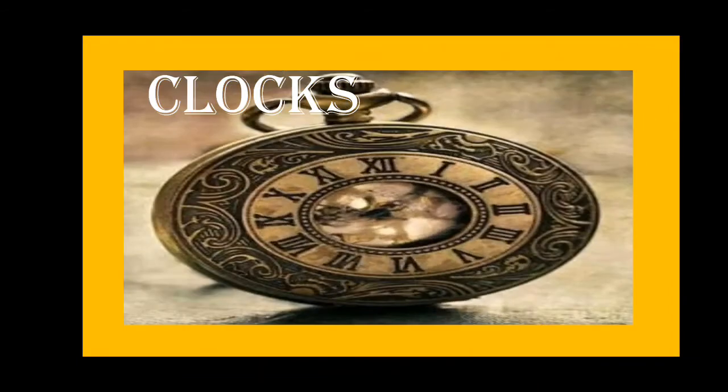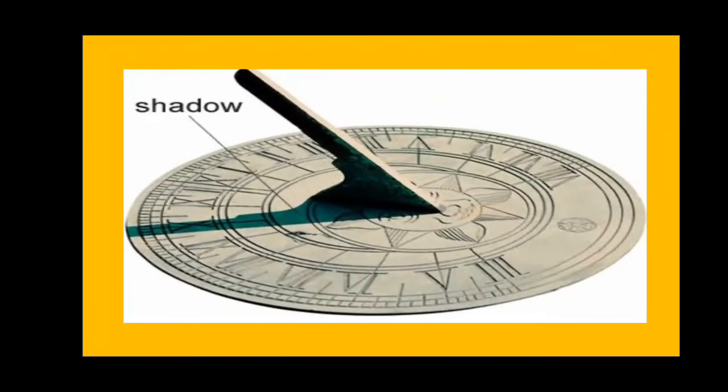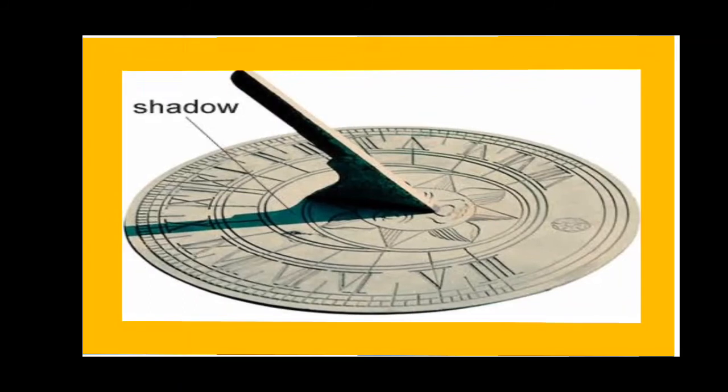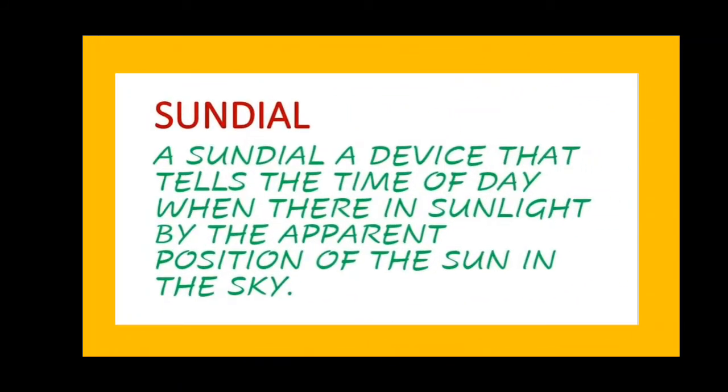Today we are going to discuss clocks and their accuracy. Let us have a look at the most ancient clocks, the sundial, and the most accurate clocks, atomic clocks. Here is a sundial that tells the time of the day when there is sunlight by the apparent position of the Sun in the sky. This was not accepted worldwide because it had a great limitation and drawback. It could not be used during the monsoon season.